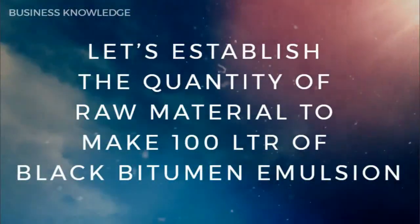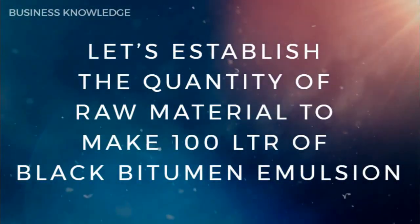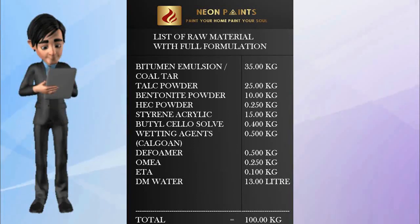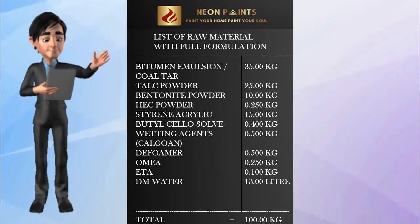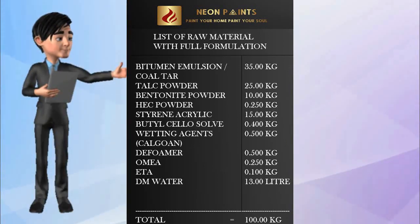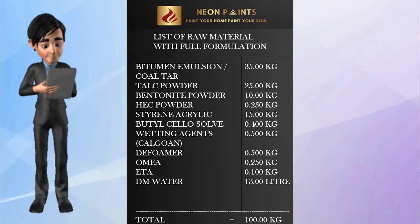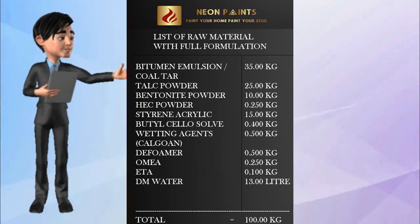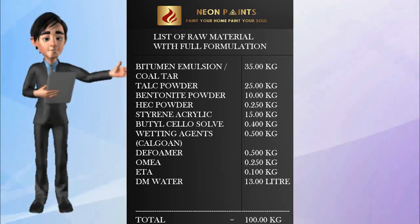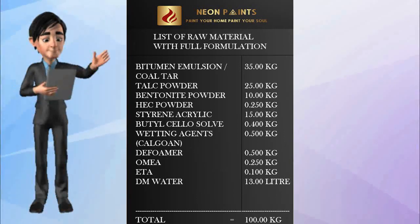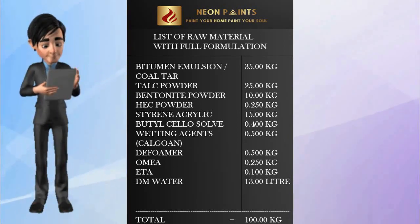To make 100 liters of black bitumen emulsion, the quantities required are: bitumen emulsion/coal tar 35.00 kg, talc powder 25.00 kg, bentonite powder 10.00 kg, HEC powder 0.250 kg, styrene acrylic 15.00 kg, butyl cellosolve 0.400 kg, wetting agent (Calgon) 0.500 kg, defoamer 0.500 kg, MEA 0.250 kg, ETA 0.100 kg, and DM water 13.00 liters.